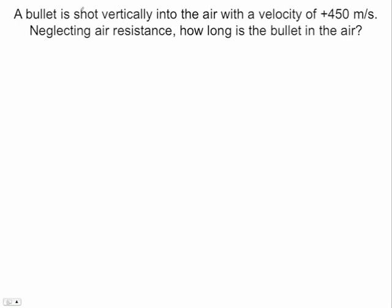Okay, in this one we have that a bullet is shot vertically into the air with a velocity of 450 meters per second. That is our initial velocity. Neglecting air resistance, how long, that's a T, is the bullet in the air?